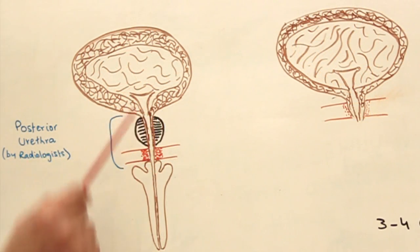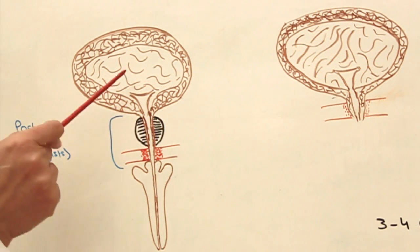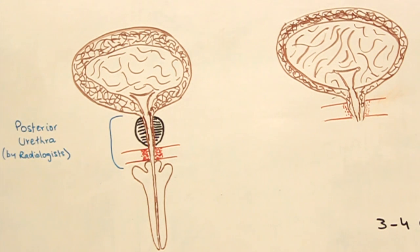Meatus is an opening. In general, the entire length of the male urethra is from 18 to 20 centimeters, and you can see how long it is.